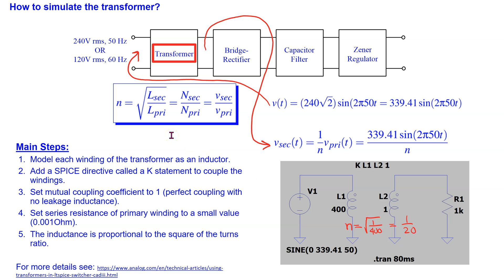The transformer obeys the relationship shown here, where V_secondary denotes the voltage at the transformer secondary. V_primary denotes the voltage at the transformer primary, which is 240 volt RMS at 50 hertz frequency. N_secondary is the number of turns in the secondary, and N_primary is the number of turns in the primary, and lowercase n is the turns ratio.